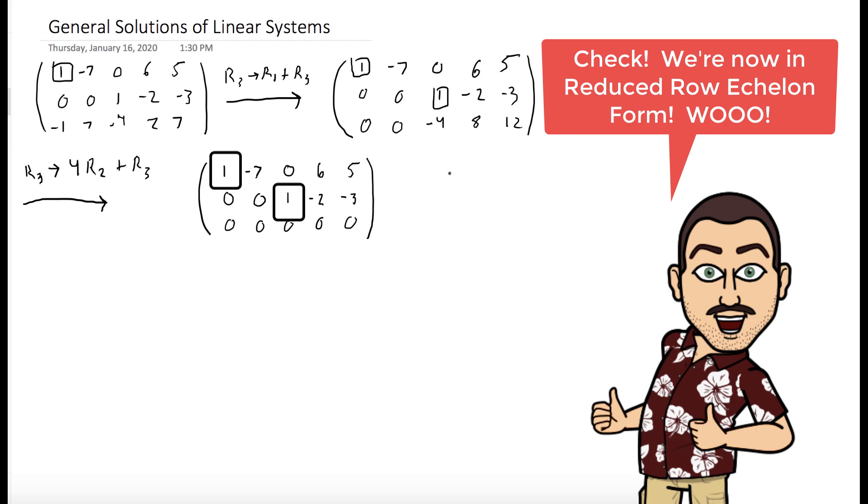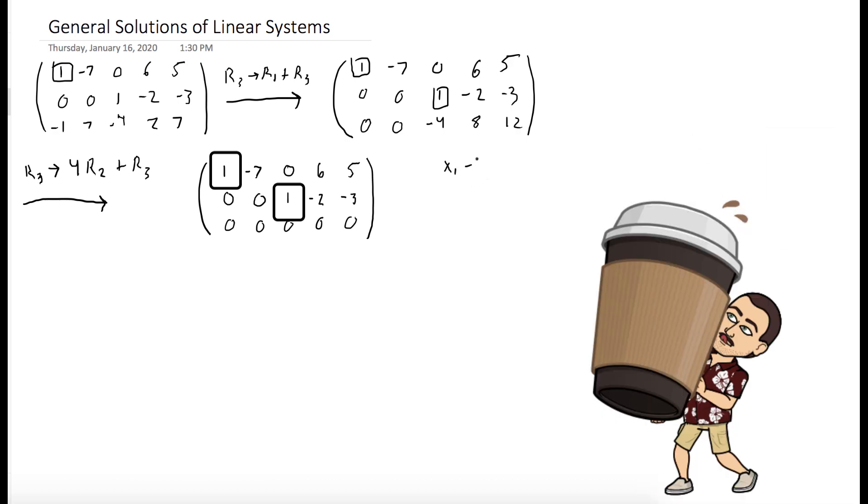And this here, this matrix is in reduced row echelon form. So we can read off the solution to the linear system.